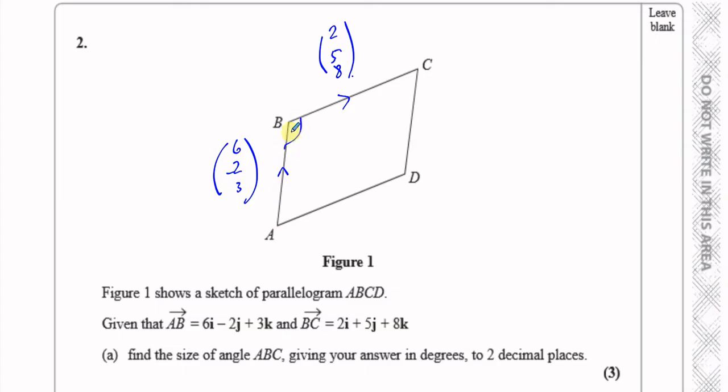I've got to find the size of this angle ABC. Now, AB is 6i minus 2j plus 3k, and BC is 2i plus 5j plus 8k. If I want to find the angle ABC, this angle here, you can see it's an obtuse angle, it's not an acute angle.